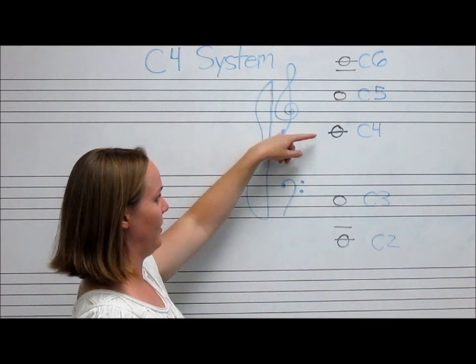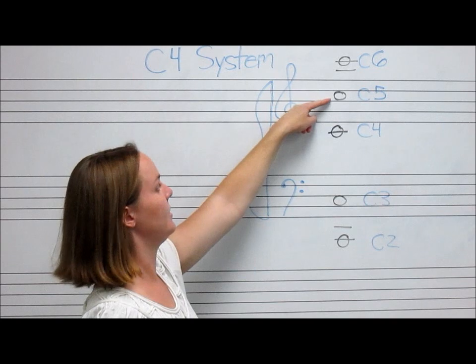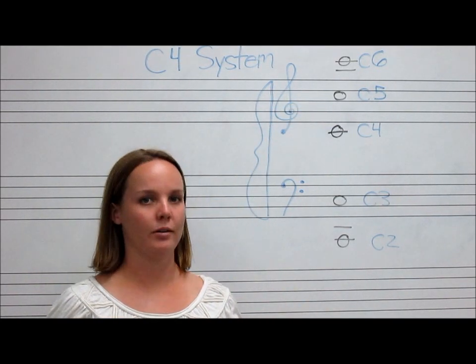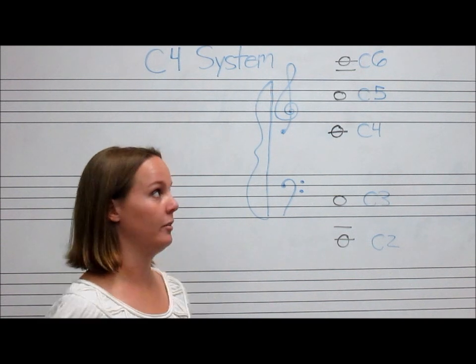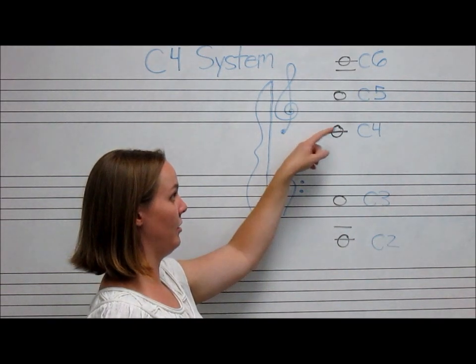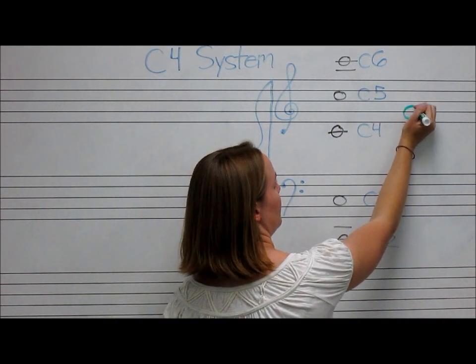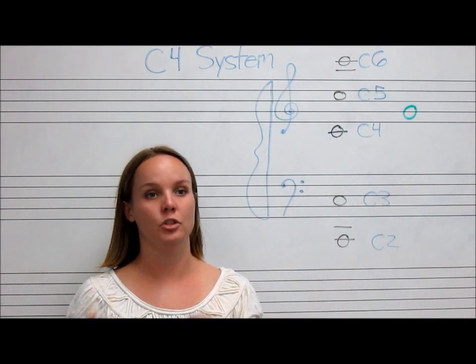So everything, every note that's in between C4 and C5 will be the note letter name plus the number 4. So for example, if I asked you to draw and label the note G above C4 here, I would draw G above middle C, and then I would label that G4.